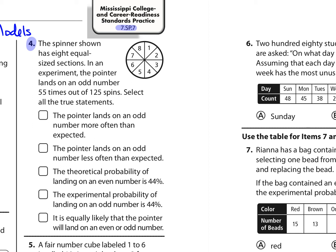The first says the pointer lands on odd more often than expected. Well, we would expect that the odd would be 1, 3, 5, and 7, 4 out of 8, which is 50% of the time. But it actually lands on odd, 55 out of 125, which as a decimal, 55 divided by 125 is 0.44, which means 44% of the time. So it actually landed on odd not more often, but less often than expected.